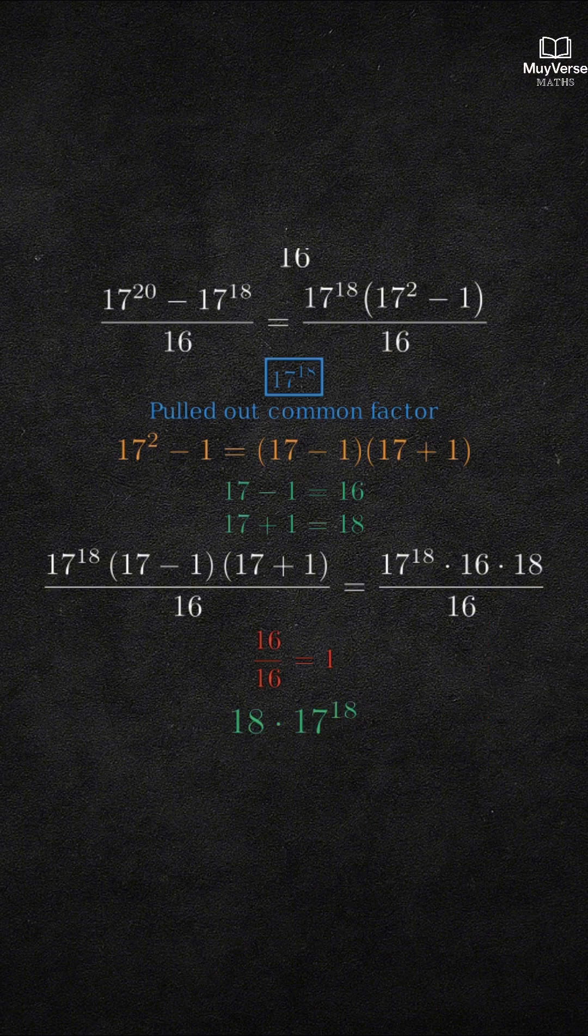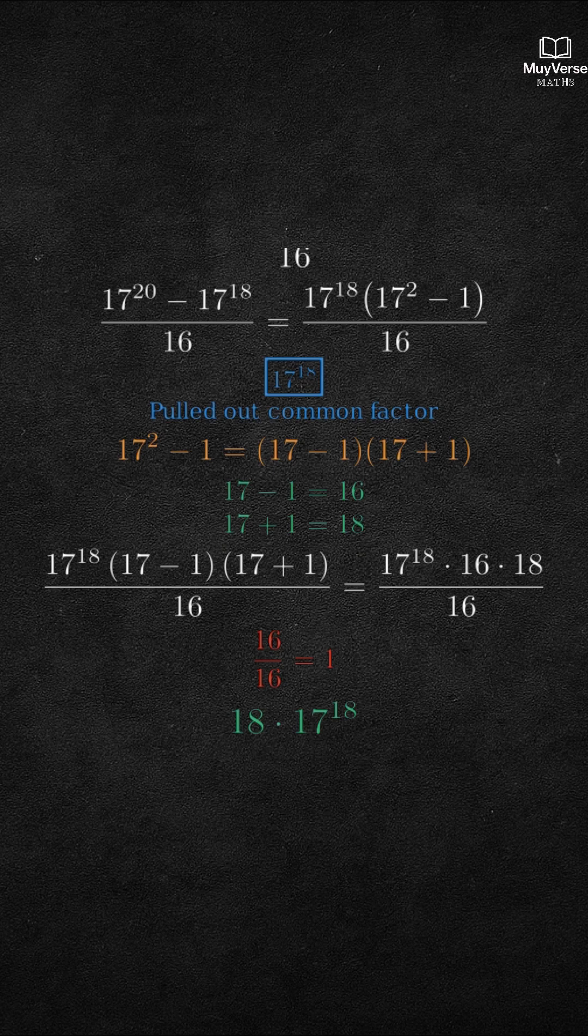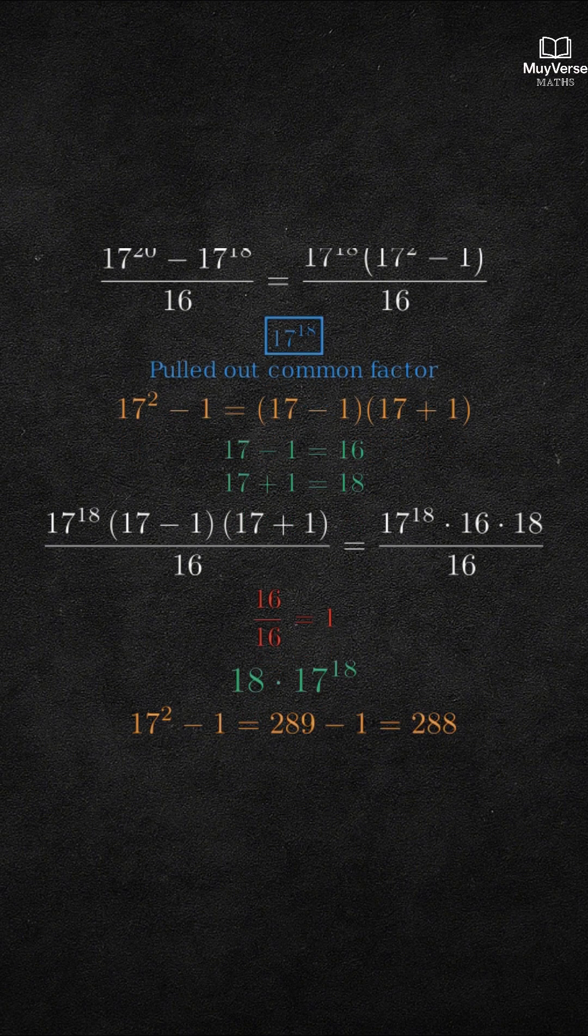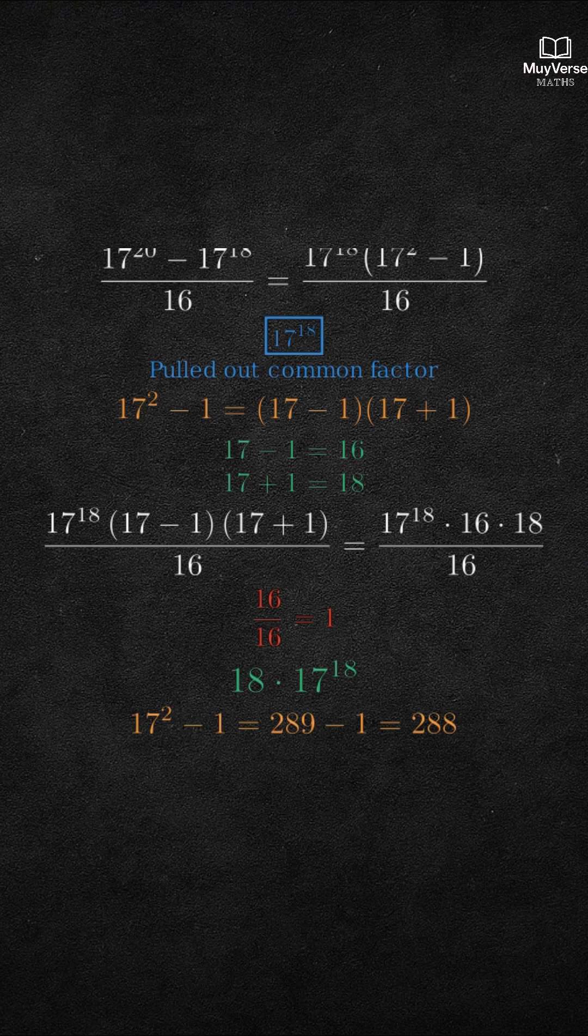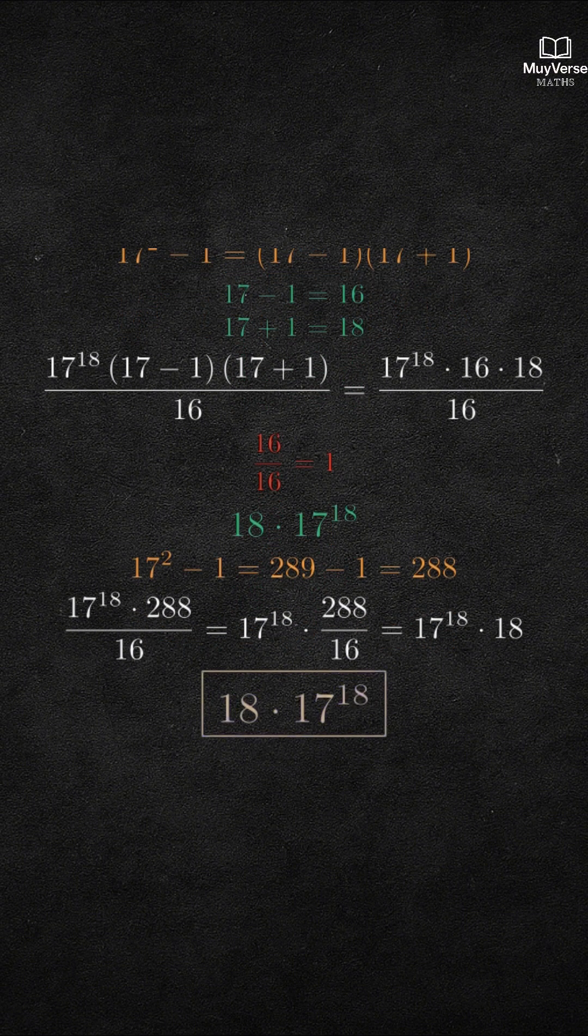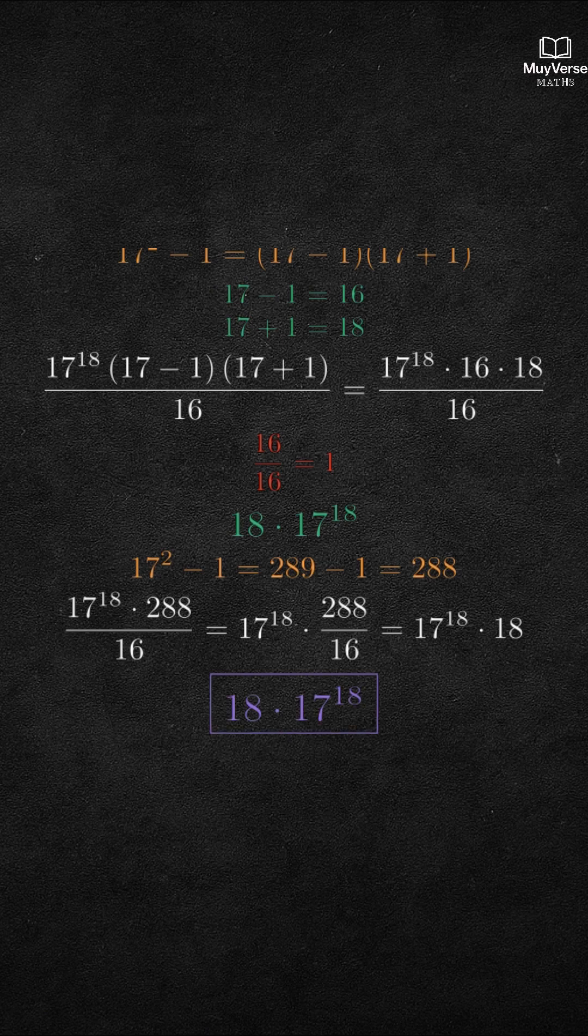Now, let us confirm the same result with straight arithmetic, step by step. 17 squared is 289. So 17 squared minus 1 is 288. Then 288 divided by 16 is 18. So the entire expression is 17 to the 18th power times 18 exactly as before.